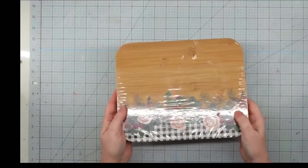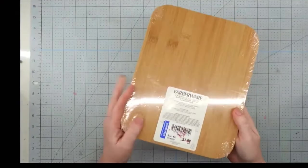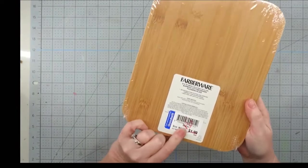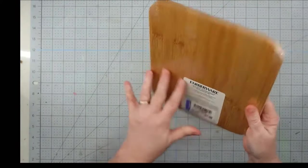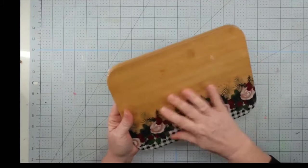Hey y'all, it's Trish. For this project, I'm going to use this cutting board that I got at Goodwill Outlet for 59 cents. I think it'll be perfect for the sign that my son asked me to make.